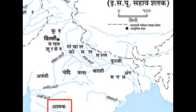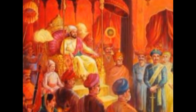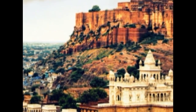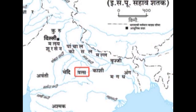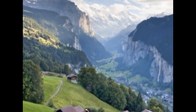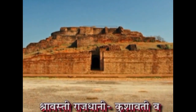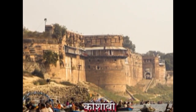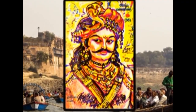જનपदांमध्ये काही जनपदांमध्ये राजेशाही तर काही मध्ये गणराज्य होते. जनपदातील जेष्ठ व्यक्तींची गण परिषद होती जी एकत्रितपणे चर्चा करून राज्यकारभार सांभाळत असे. अवंती आणि मगध ही महत्त्वाची राज्ये होती. कोसल हे हिमालयाच्या पायथ्याशी नेपाळ आणि उत्तर प्रदेशाच्या परिसरात होते.